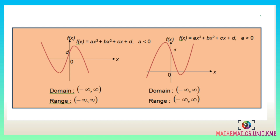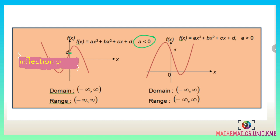Next, for f(x) equal to ax³ plus bx² plus cx plus d with a less than 0, the graph of the cubic function is S-shaped and the inflection point is at d. At the right it is concave down and at the left it is concave up.